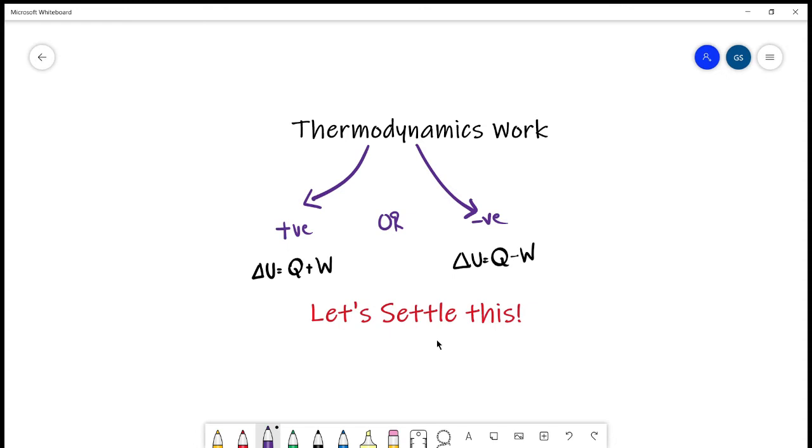Hello everyone, we will continue our thermodynamics series. Before moving on to the next topic, let's settle this thing. We have studied in class 11 that work in physics is often written as PdV, which is a positive quantity. When we switched to chemistry, work suddenly became minus PdV, and the equations we studied in the previous lecture became minus W. So which one is correct?